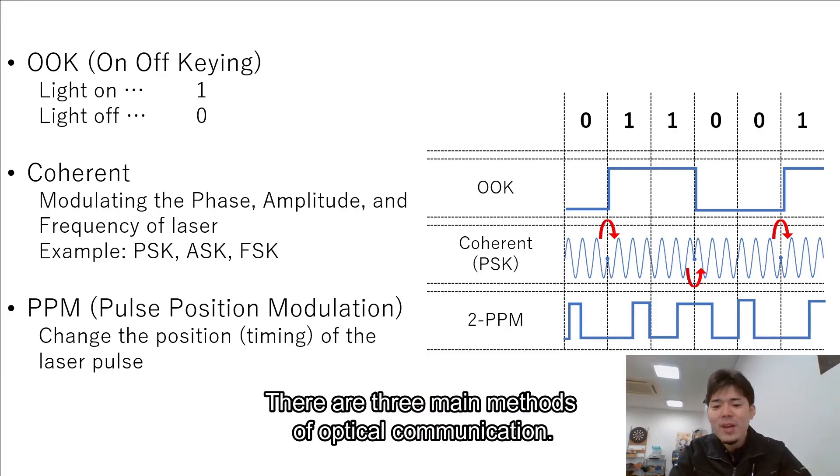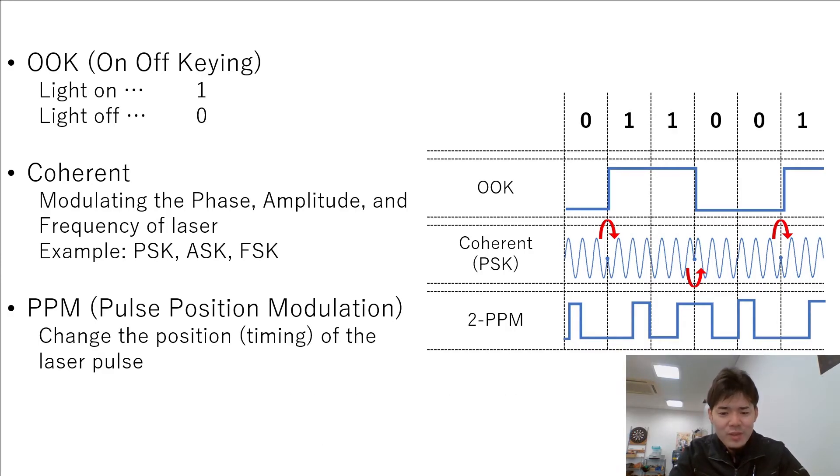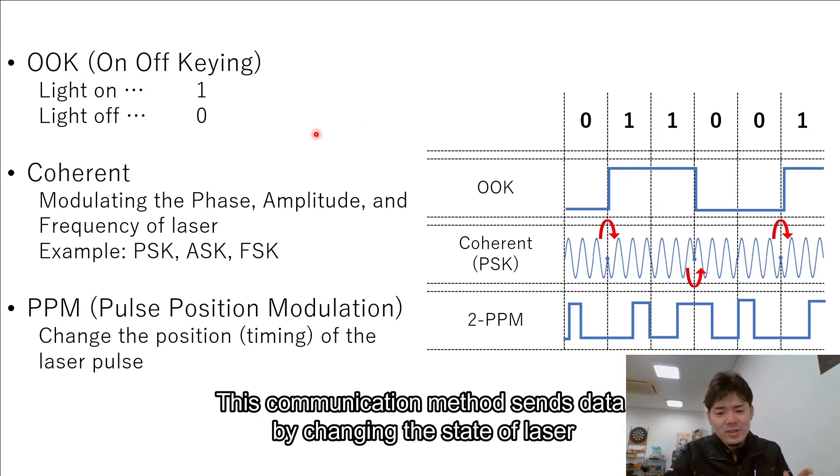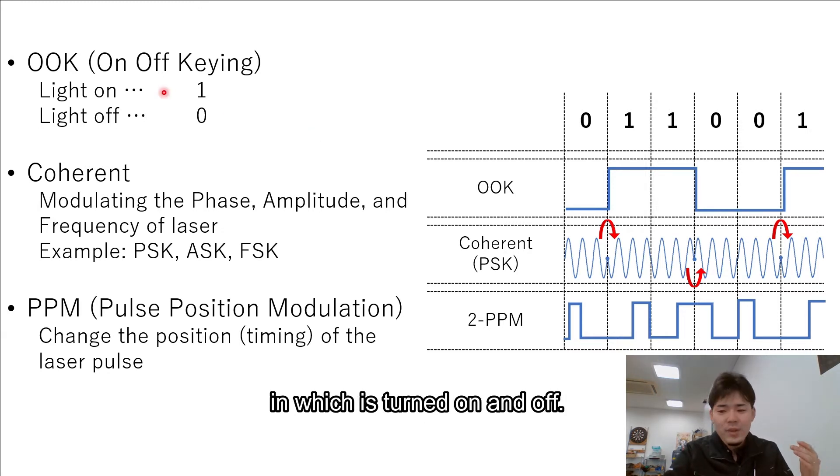There are three main methods of optical communication. The first one is On-Off Keying. This is the simplest method. This communication method sends data by changing the state of the laser, which is turned on and off.